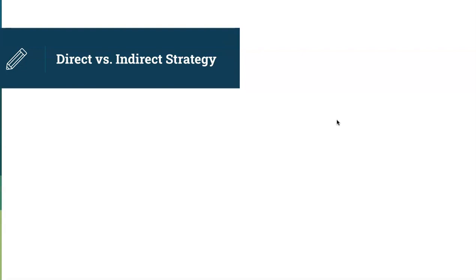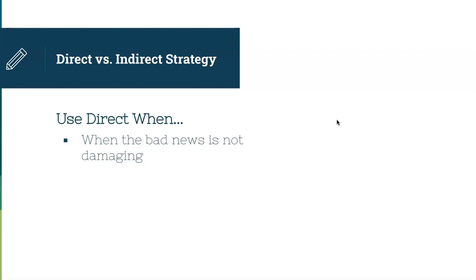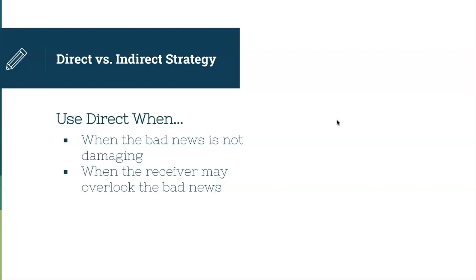Now let's talk about the direct versus indirect strategy when composing messages within the context of negative news. You'll use direct — meaning you come right out and deliver the bad news immediately — when the bad news is not damaging, like if you work for a company and you're increasing the price of a service by just a few dollars. You can also use direct when the receiver may overlook the bad news, such as when companies change their terms and conditions, which people aren't likely to be up in arms about.